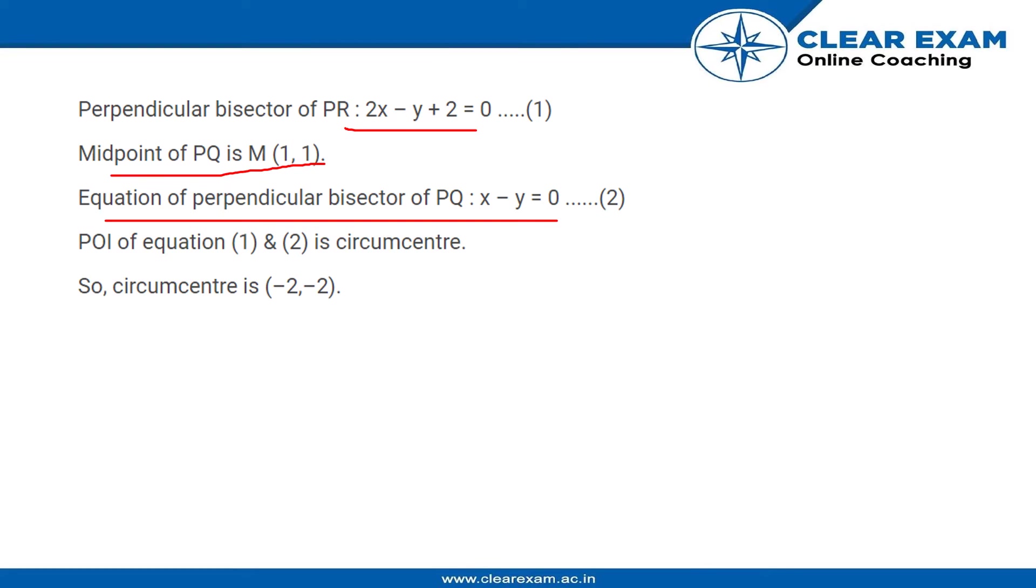And if we look over here, the point of intersection of equations 1 and 2 - that is the perpendicular bisector of PR and the perpendicular bisector of PQ - will give us the circumcenter. As we know, whenever we need to find the circumcenter, if we have the perpendicular bisector of any two sides, their intersection will be the circumcenter.